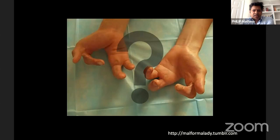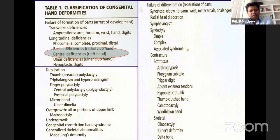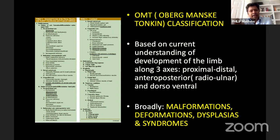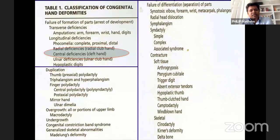When you get a congenital hand anomaly, you need a good idea of the basics of Swanson's classification: is it a failure of formation, duplication, overgrowth, undergrowth? You need a rough idea of which subsection it falls under — for example, is it a central deficiency such as a cleft hand? Also be aware that a newer classification has been introduced called the OMT — the Oberg-Manske-Tonkin classification — based on developmental axes: proximal-distal, AP, or dorsal-ventral, broadly classified into malformations, deformations, dysplasias, and syndromes. You don't need to know this in depth, but just be aware it exists; Swanson's is still fine.